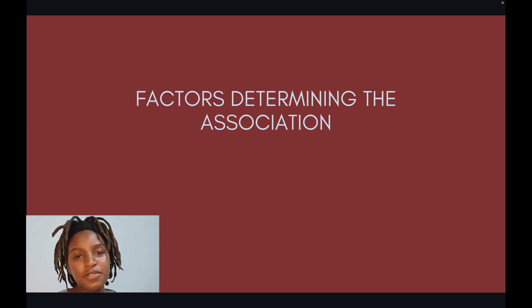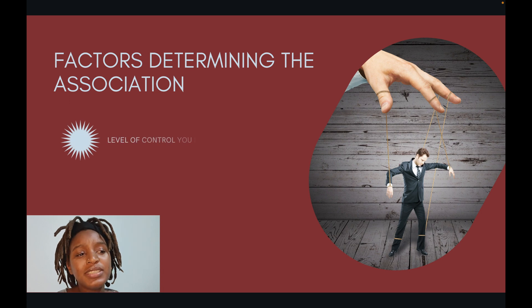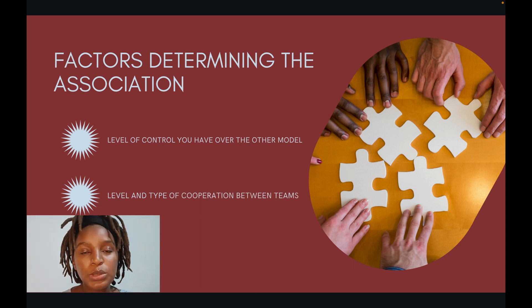Let's look at factors determining which context mapping association to choose. First, the level of control you have over the other model influences your choice a lot. You may rely on conformist when you don't have control over the other model. But if you have more control, you may use customer-supplier, where you can influence how the other model progresses or have advance knowledge before changes are made.